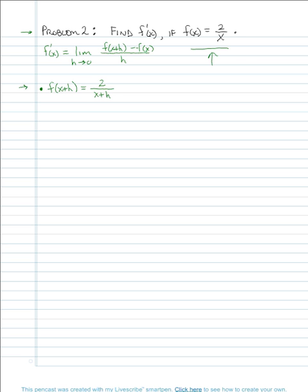That first step was easier than before, but the problem turns out to be more difficult overall. Step two is to calculate f of x plus h minus f of x: that's 2 over (x plus h) minus 2 over x. We need to subtract these fractions, which requires a common denominator. Since the denominators share no common factors, the lowest common denominator is x times (x plus h).